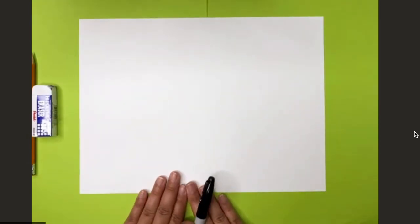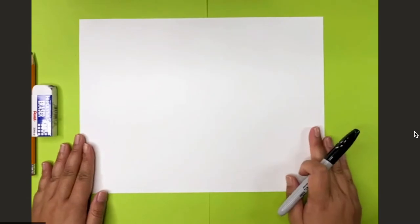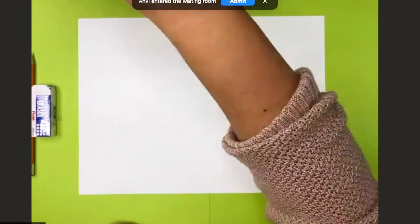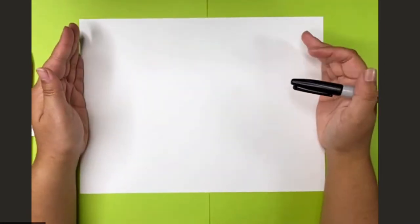So everybody have their paper this way. Make sure it's landscape-wise so it's long like a hot dog. Does everybody have it long like a hot dog? Awesome. Okay, so we're going to place our paper this way and we're going to start with a big circle.